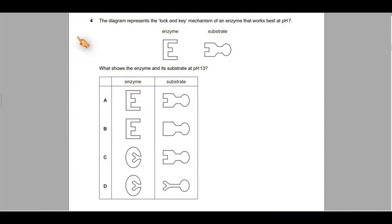Alright, let's answer this question, question number four. The diagram represents the lock and key mechanism of an enzyme that works best at pH 7, so the optimum is at 7. Enzyme and that's the substrate. You know the difference by now. So what shows the enzyme and substrate at pH 13? So pH 13, what do you expect to happen? pH 13 is very far from 7, you have 8, 9, 10, 11, 12 in between. So we expect this enzyme to be denatured at 13, definitely.